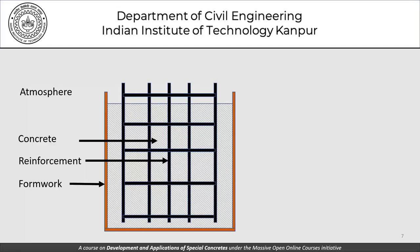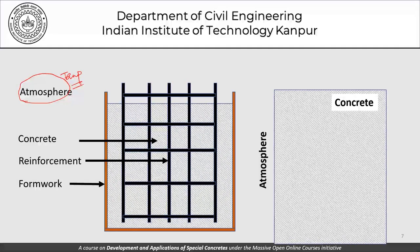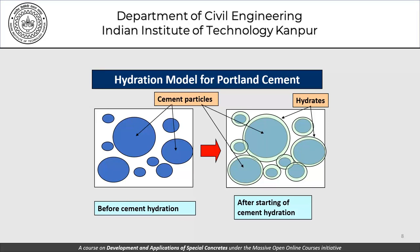Before getting into hot weather concreting, consider the basic concrete construction process: concrete being cast in formwork where the atmosphere is not normal because the temperature is higher. For simplicity, the model shows what happens when formwork is removed — how does concrete interact with an environment that is higher than normal in temperature? The coarse and fine aggregates are largely inert, so the key issue is how the hydration process in Portland cement is affected when the outside temperature is high.